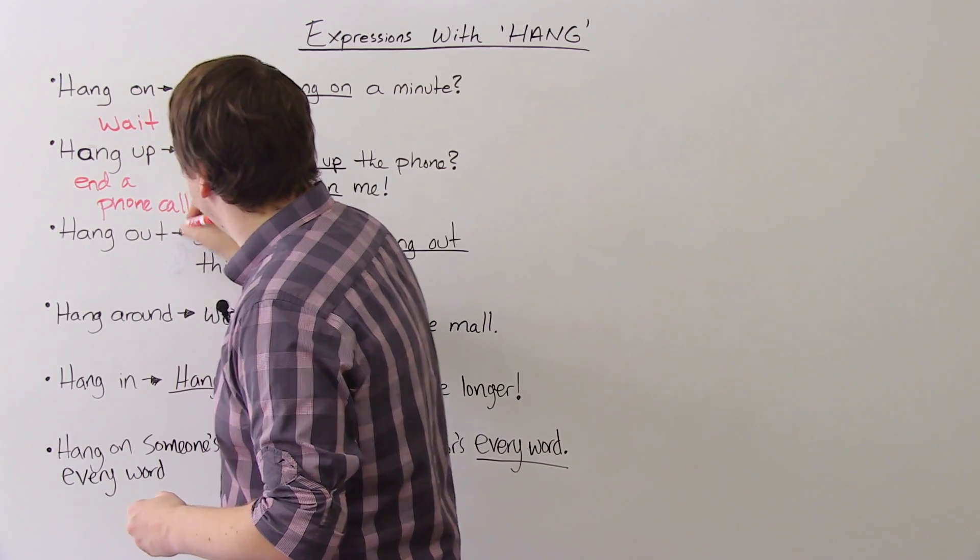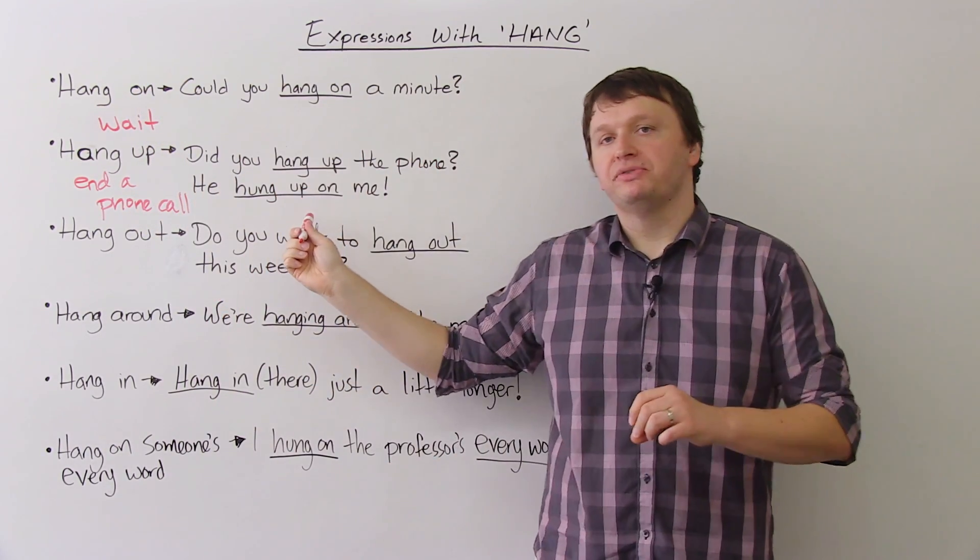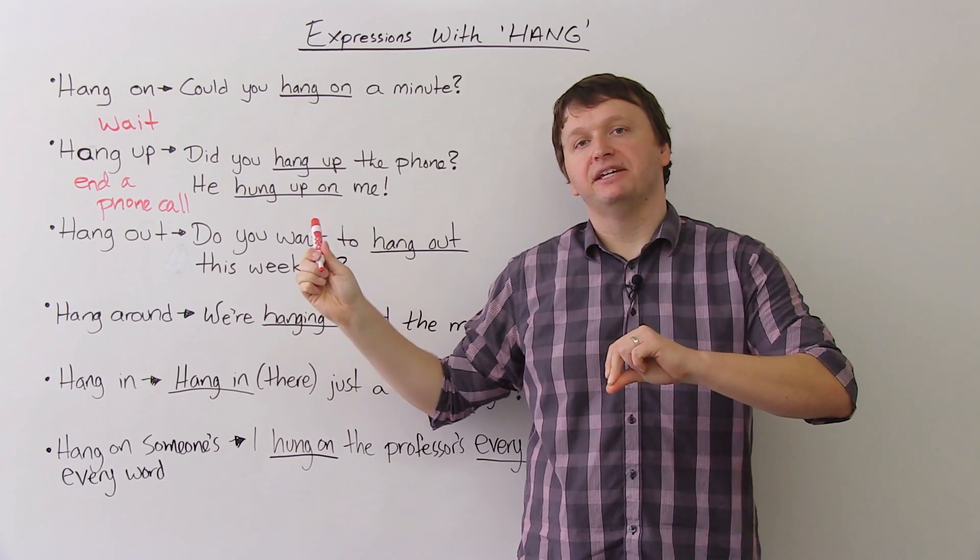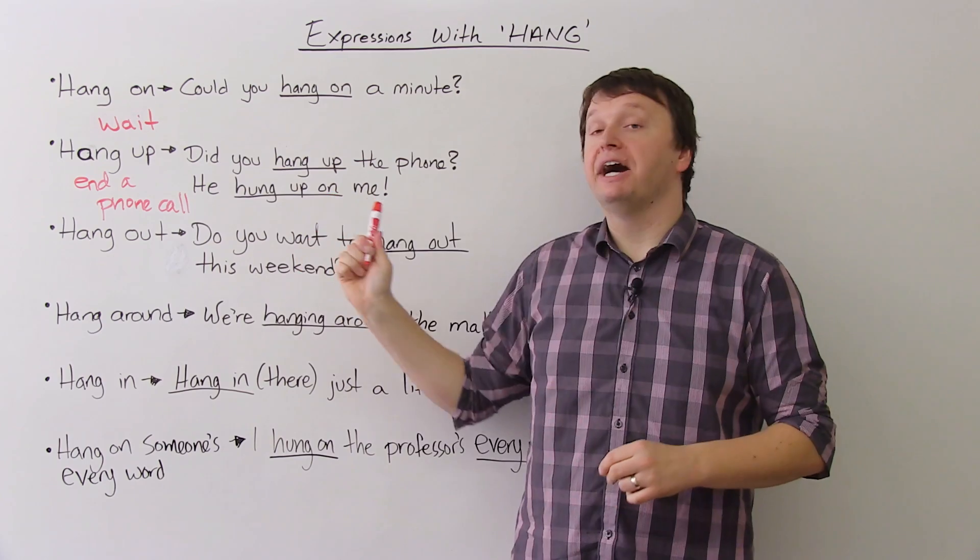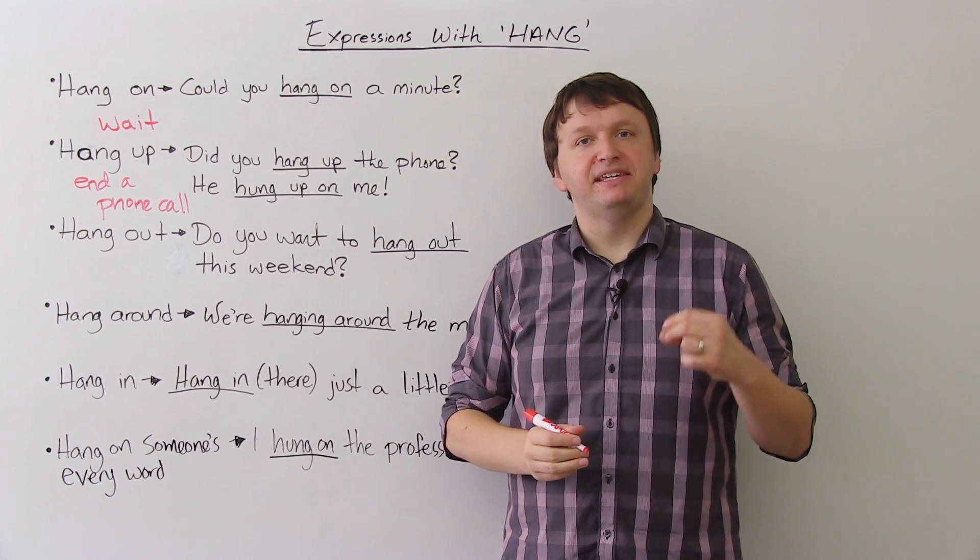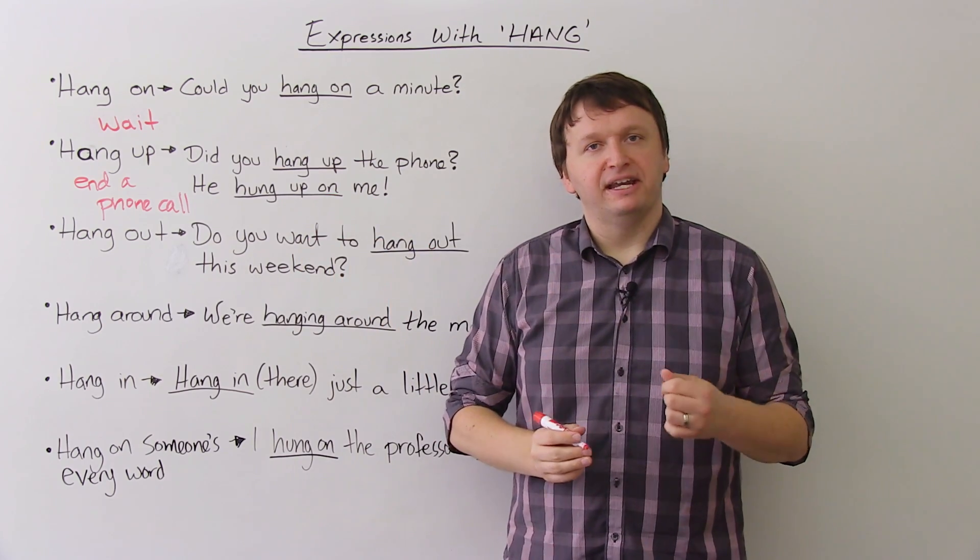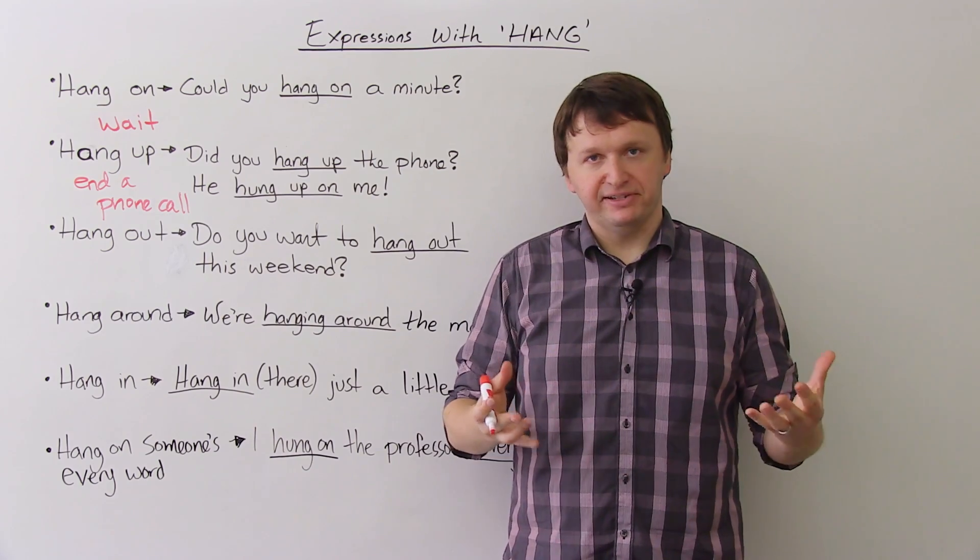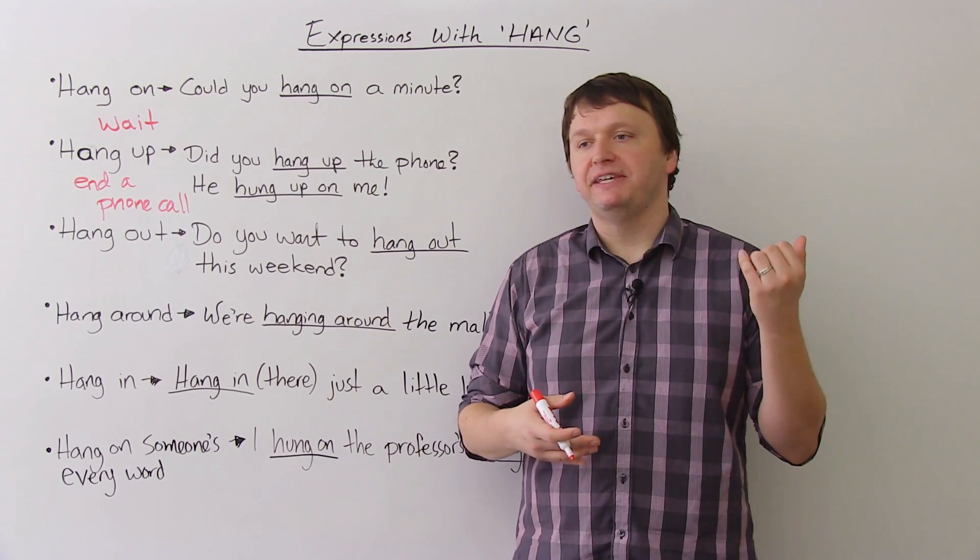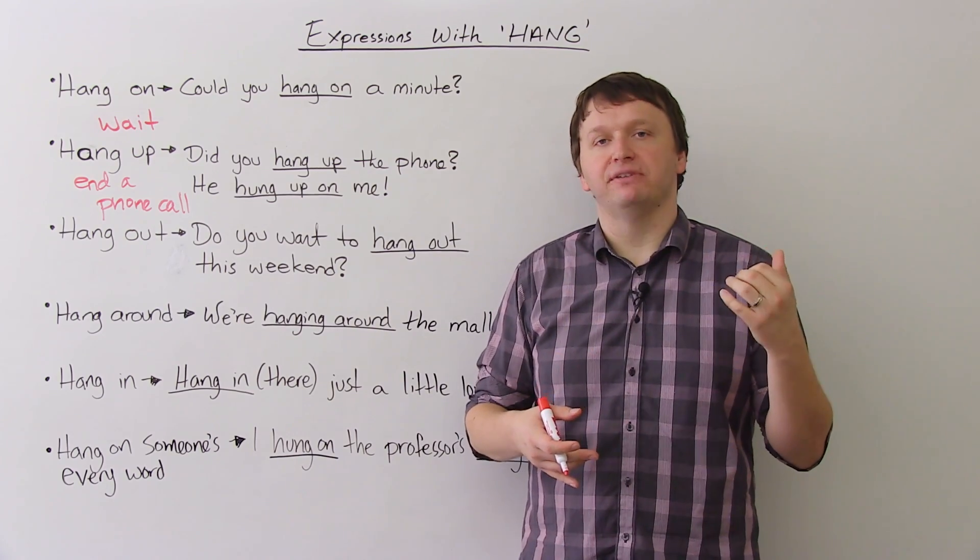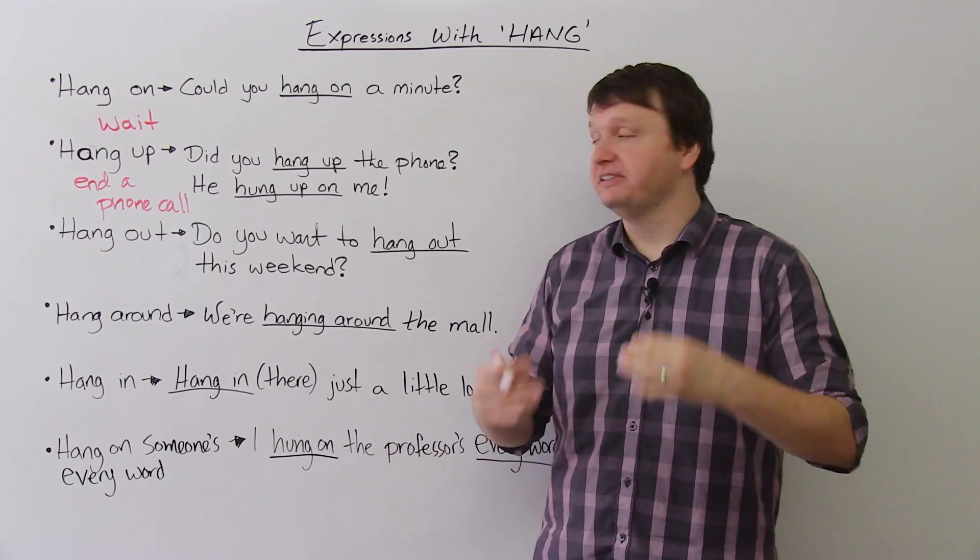And the important part here is to know you can use the preposition on if someone hangs up on you. So if I say he hung up on me, that means he ended the phone call. Now usually this is because the other person was angry or upset at you. So I can't believe he hung up on me. I can't believe she hung up on me.